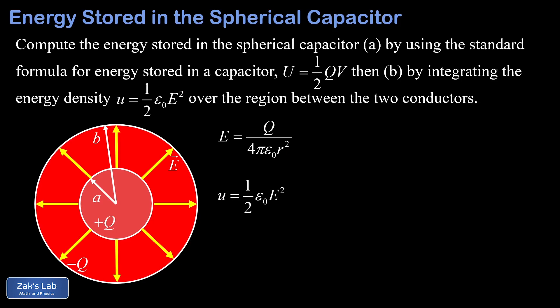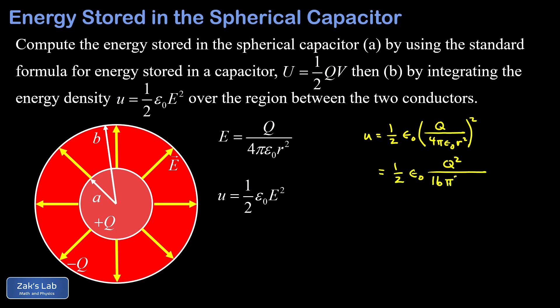The electric field energy density is u = ½ε₀E². Plugging in the electric field magnitude, we get u = ½ε₀ × (Q / 4πε₀r²)², which gives ½ε₀ × Q² / (16π²ε₀²r⁴). Canceling one factor of ε₀ and combining the 2 with the 16, we arrive at u = Q² / (32π²ε₀r⁴).